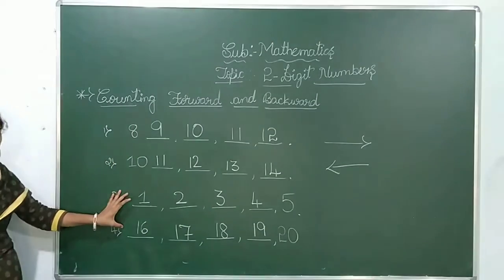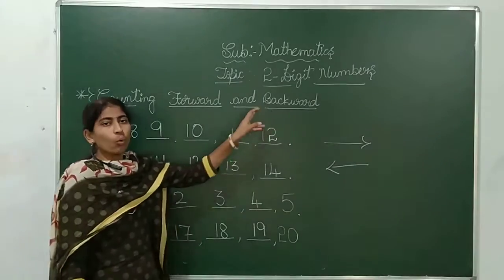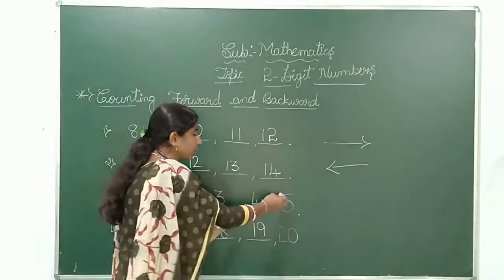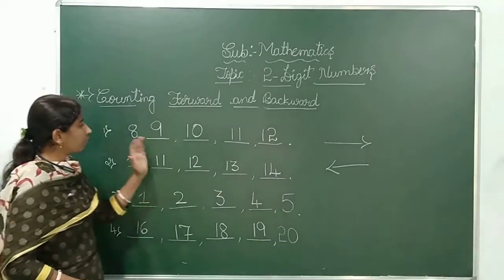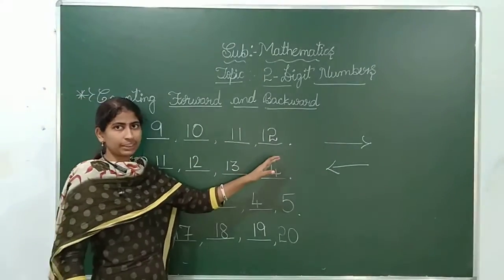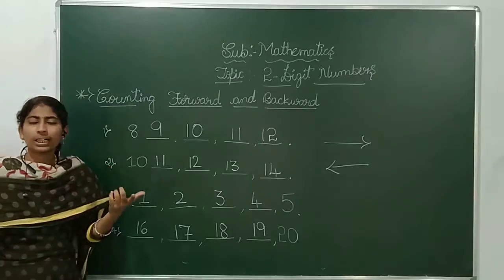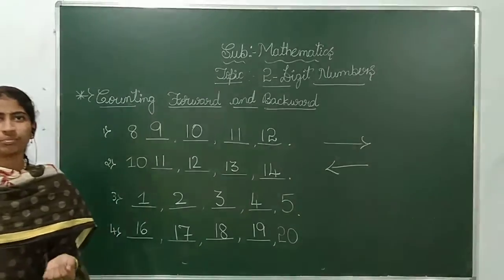Listen, these two examples belong to the backward. Why? Because we are going to write the numbers like this, isn't it? Here there are the blanks in the forward, here there are the blanks. Next, go through the comparing of numbers.